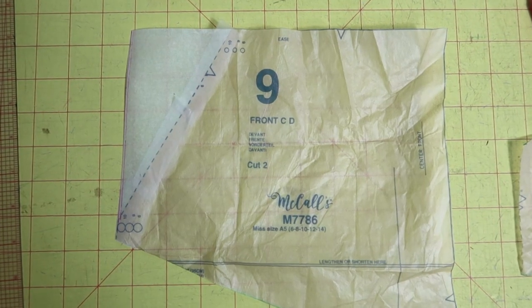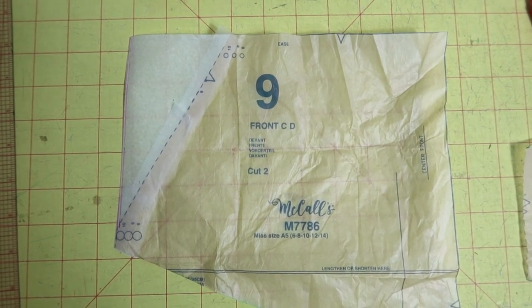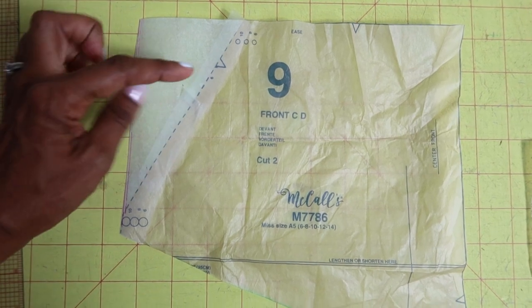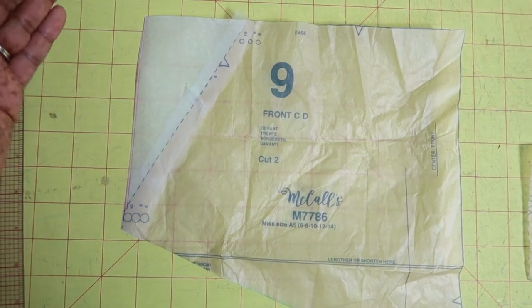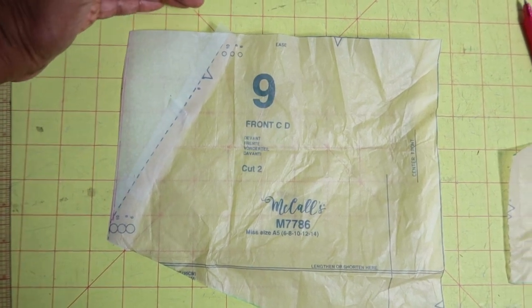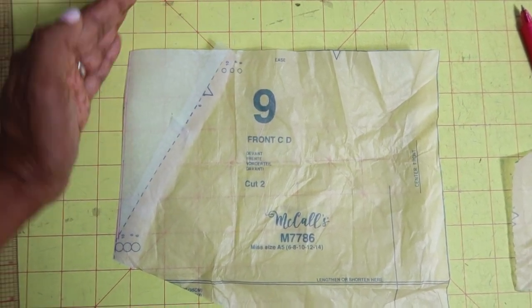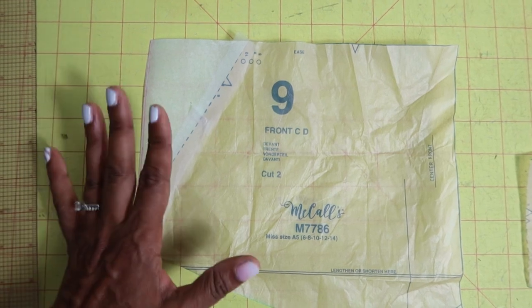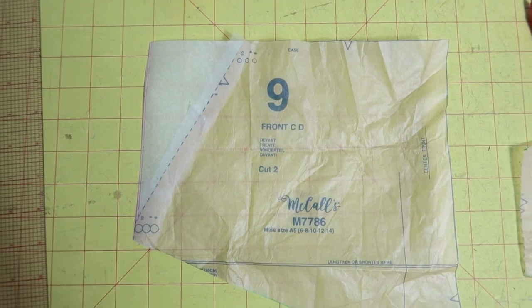I decided not to add pockets, so what I did was I put some paper over here to fill in this side area where the pocket would normally go. Having the paper here fills in the area to mimic a full front, and that way I can eliminate the pocket with no problem.